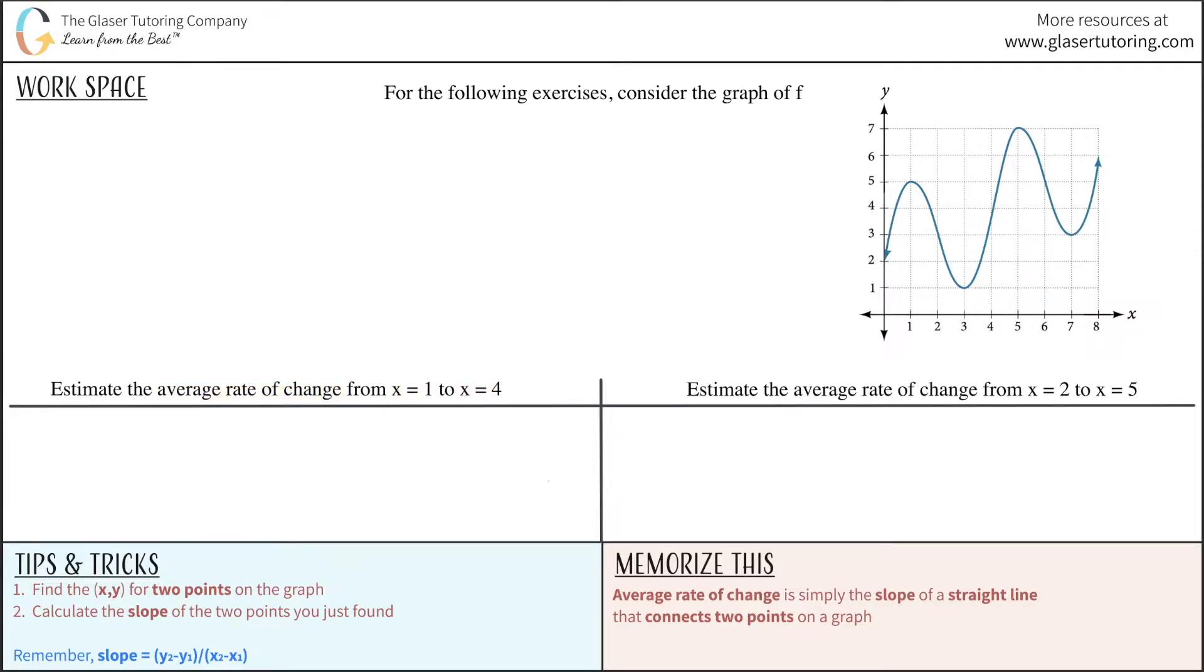So the first thing is, recall that the average rate of change is just the slope of a straight line that connects two points on a graph. So what two points for this question are we talking about?